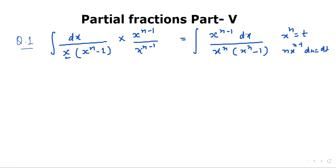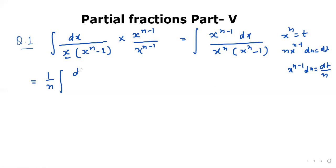We have x power n minus 1 dx, so x power n minus 1 dx equals dt upon n. It will become 1 upon n times the integration of dt divided by t times t minus 1.